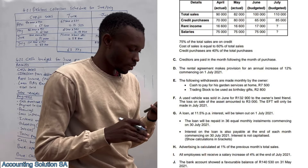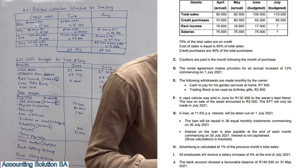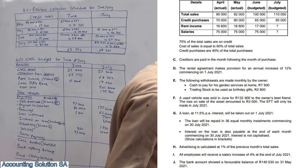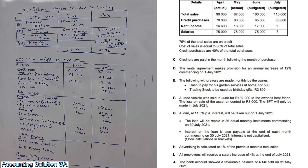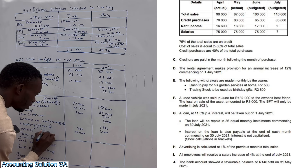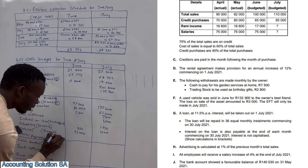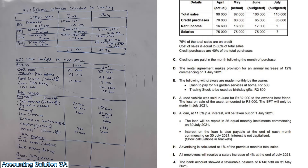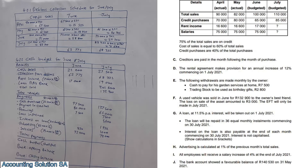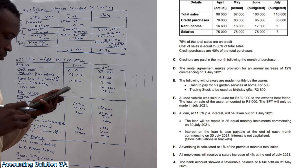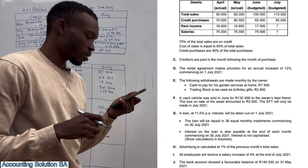All employees will receive a salary increase of 4% at the end of July. Salary was 75,000. For July: 75,000 multiplied by 104% gives 78,000. The bank showed a favorable balance of 140,580 on 21 May 2021 — a favorable balance is positive, an unfavorable balance is negative. This is our opening balance: 140,580.